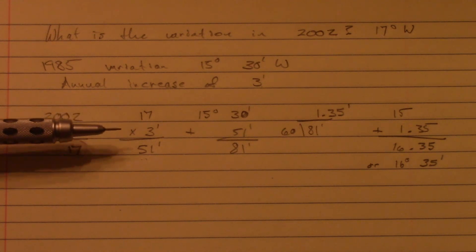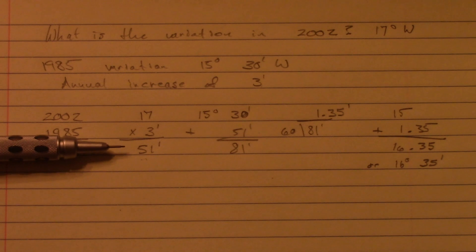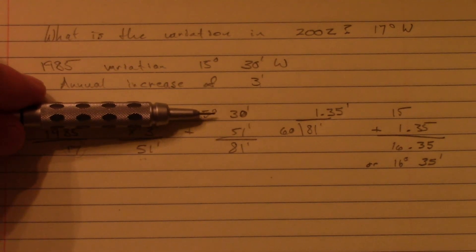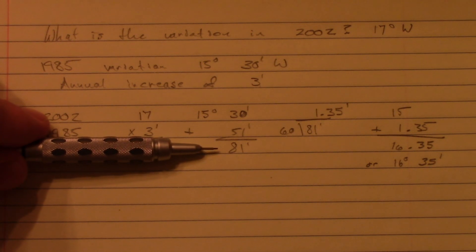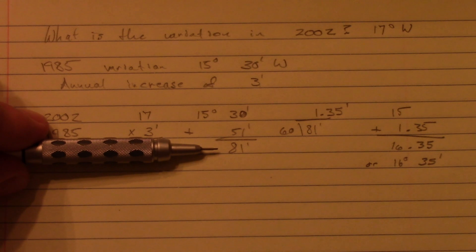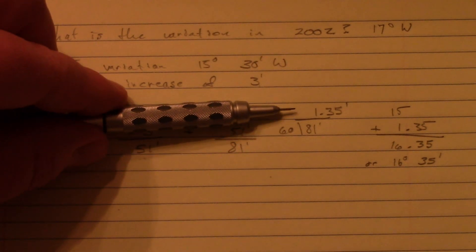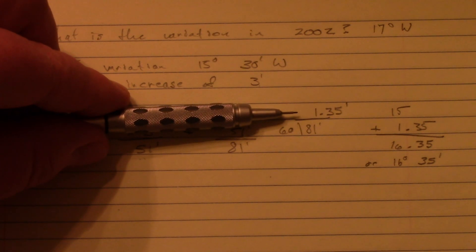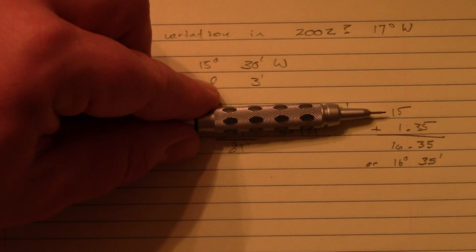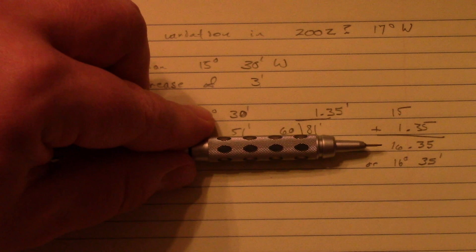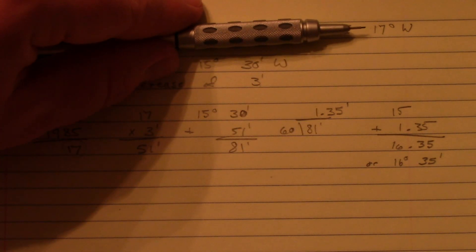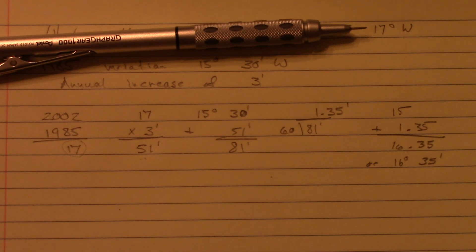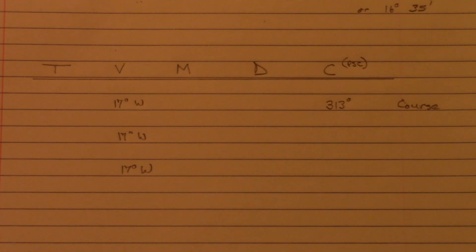We multiply 17 years times three minutes and come up with 51 minutes. We take the 30 minutes from 15 degrees 30 minutes and add 51 minutes — that gives us 81 minutes. Reducing that to degrees and minutes: 81 minutes divided gives us 1 degree 35 minutes. Adding that to 15 degrees gives 16 degrees 35 minutes, which we round up to 17 degrees westerly variation.